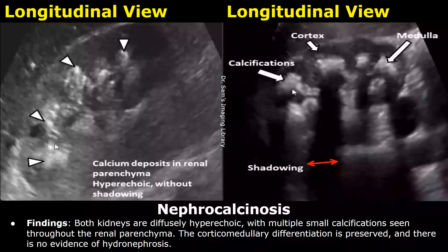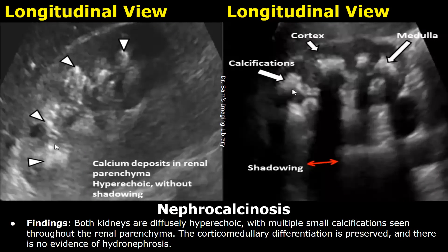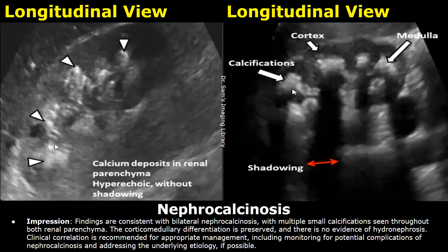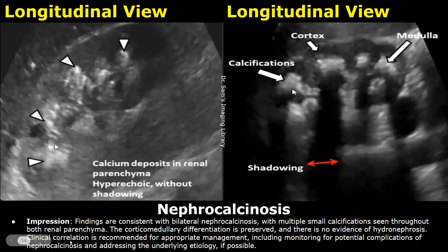This example is of nephrocalcinosis. Both kidneys are diffusely hyperechoic and have multiple small calcifications seen throughout the renal parenchyma. In this example, the corticomedullary differentiation is preserved. In the impression, you can write findings are consistent with bilateral nephrocalcinosis, with multiple small calcifications seen throughout the renal parenchyma. The corticomedullary differentiation is preserved in this case, and there was no associated hydronephrosis. It is important to write about clinical correlation.